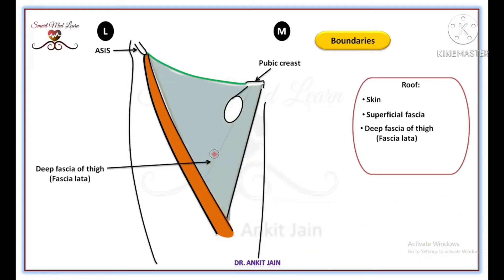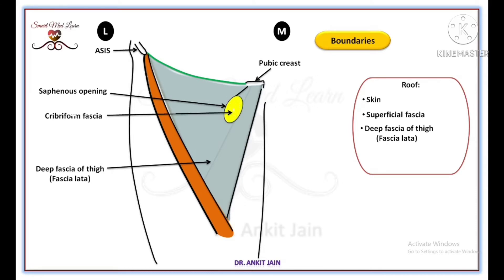The deep fascia of the thigh, also known as fascia lata, overlies the femoral triangle and has an oval opening known as the saphenous opening. This saphenous opening is closed by a membrane of areolar tissue known as the cribiform fascia.